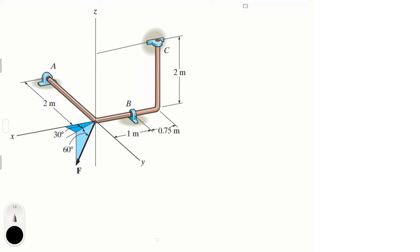First, let's draw the free body diagram. We have reaction Cx, which we know is 50 newtons, and reaction Cy. For B, we have Bz and By. For A, we have Az and Ax. Those are all the forces in this system.